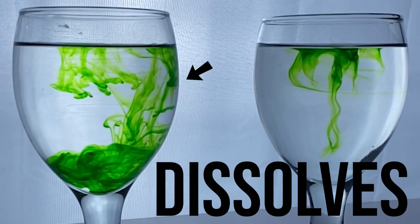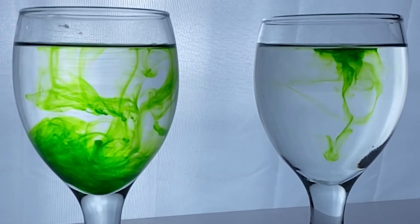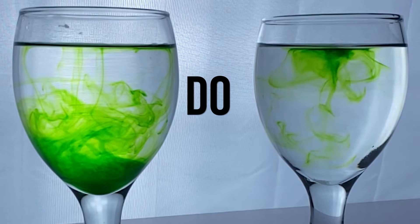We can see that the food color dissolves with normal water, but on the other hand, we can see that the food color floats in the sugar water and does not dissolve.